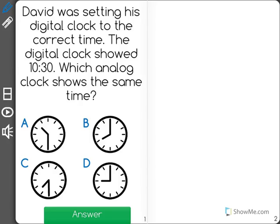David was setting his digital clock to the correct time. The digital clock showed 10:30. Which analog clock shows the same time?